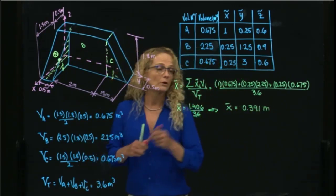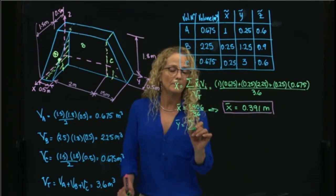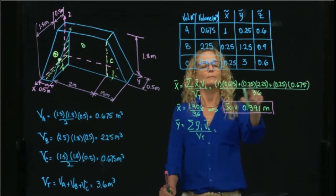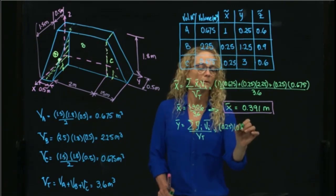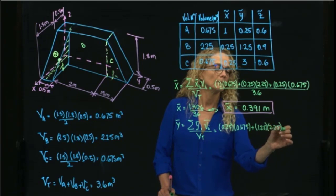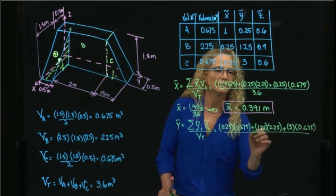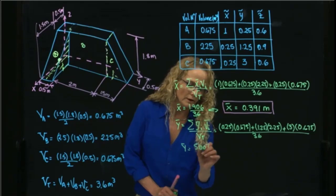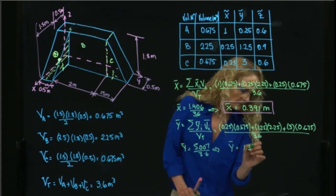The second coordinate uses the same approach but with the Y values. Ȳ equals (0.25 × 0.675 + 1.25 × 2.25 + 3 × 0.675) divided by 3.6. That equals 5.007 divided by 3.6, giving Ȳ = 1.39 meters.